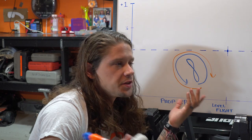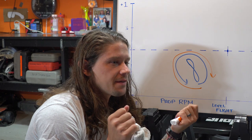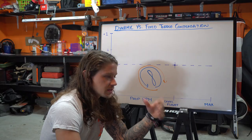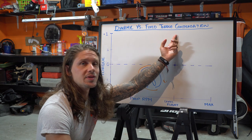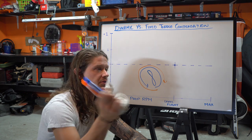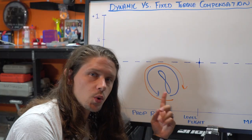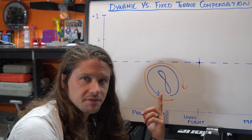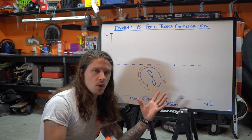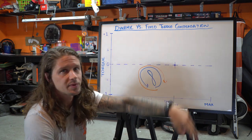Even single engine aircraft have to deal with this. If you've ever flown a single engine aircraft and powered up going down the runway, you know you have to compensate with the rudder to keep it going straight — that's because of propeller torque. Same thing for a helicopter: the tail rotor is its torque compensation. If a helicopter loses its tail rotor, it just spins out of control. So torque is bad, it's an undesirable effect. Paramotor manufacturers incorporate one of two main ways to compensate: dynamic torque compensation and fixed torque compensation.